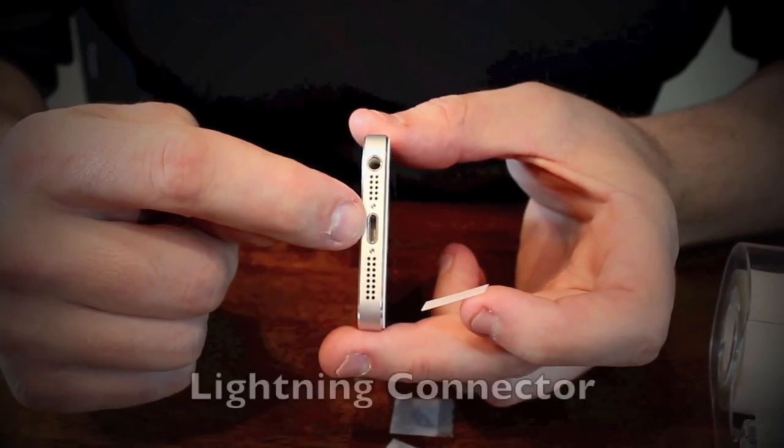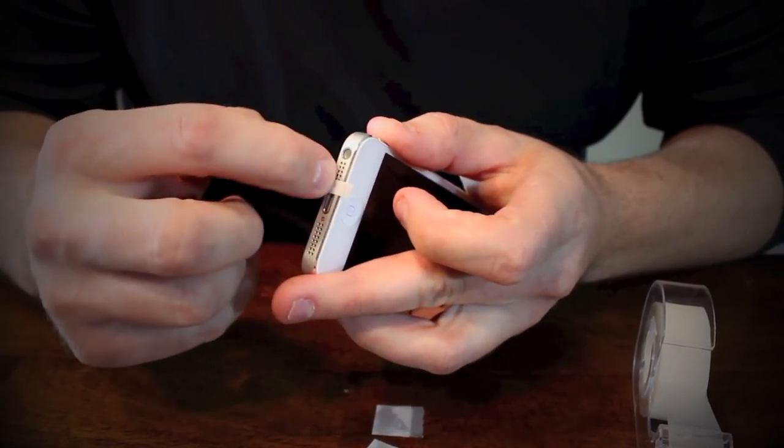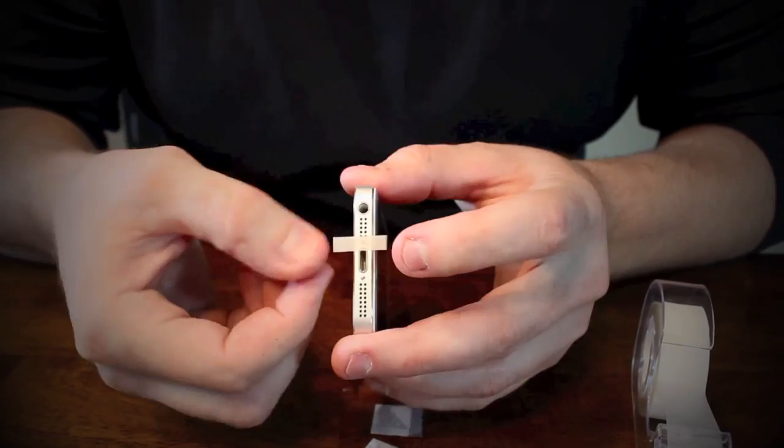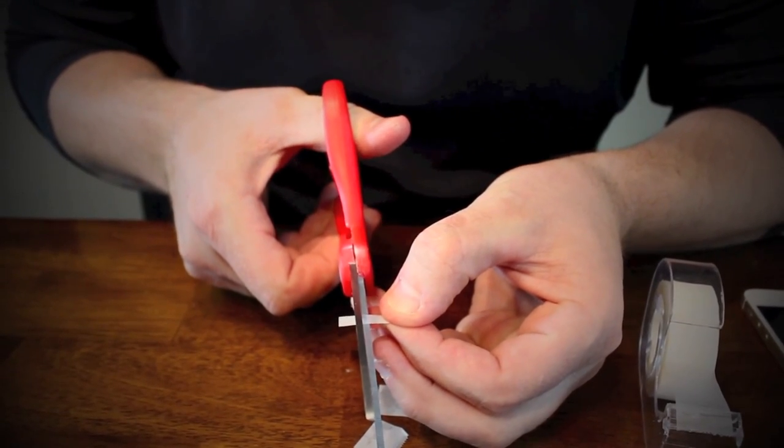We're going to stick this right between the lightning connector and the microphone. Push down so that kind of gives the tape a little crease, and we're going to pull that off. Very carefully cut along that line to make sure we have a good fit.